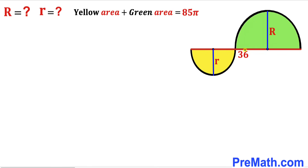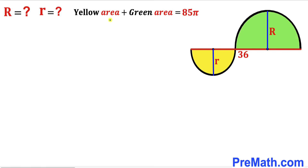Welcome to Premath. In this video we have got two semicircles: the yellow semicircle with radius lowercase r and the green semicircle with radius uppercase R, put together as shown in the diagram, such that the sum of their diameters is 36 units, and moreover the sum of their areas — the yellow semicircle area plus the green semicircle area — is equal to 85π square units.